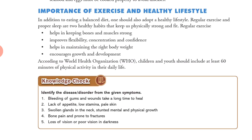In addition to eating a balanced diet, one should also adopt a healthy lifestyle. Regular exercise and proper sleep are two healthy habits that keep us physically strong and fit. Regular exercise helps keep bones and muscles strong, improves flexibility, concentration and confidence, helps maintain the right body weight, and encourages growth and development. According to the WHO — World Health Organization — children and youth should include at least 60 minutes of physical activity in their daily life.